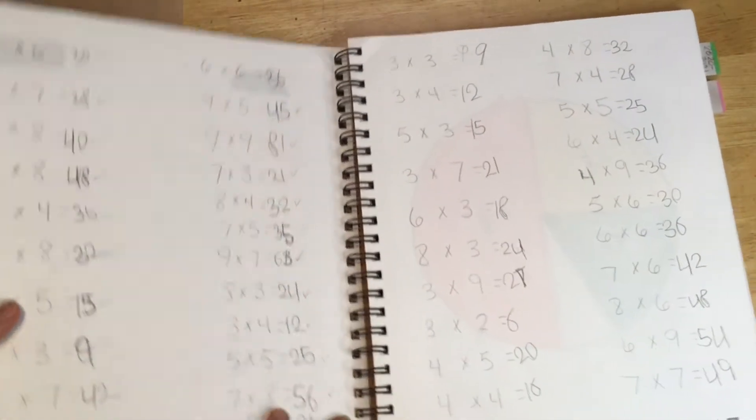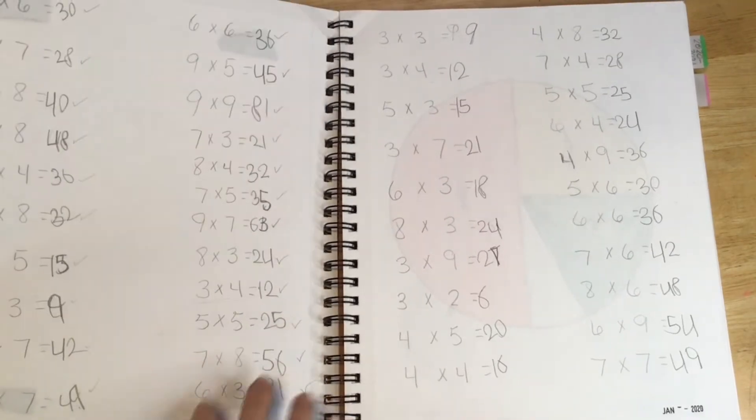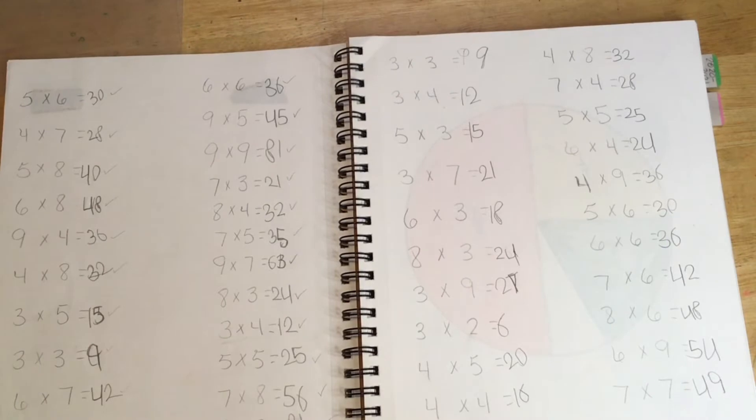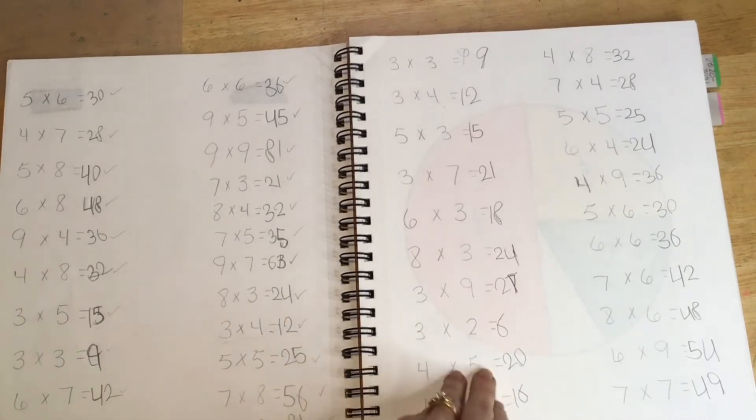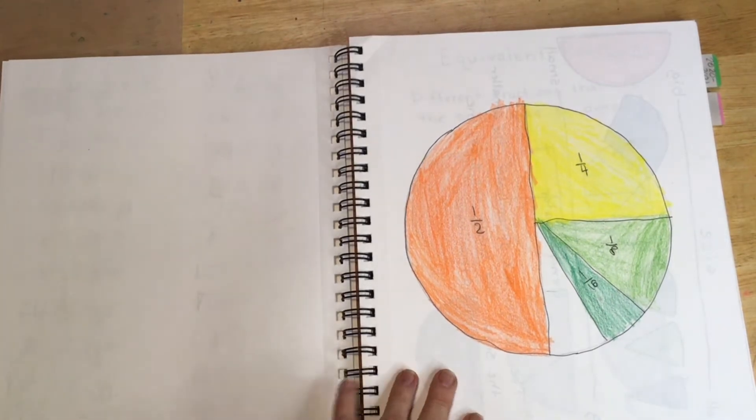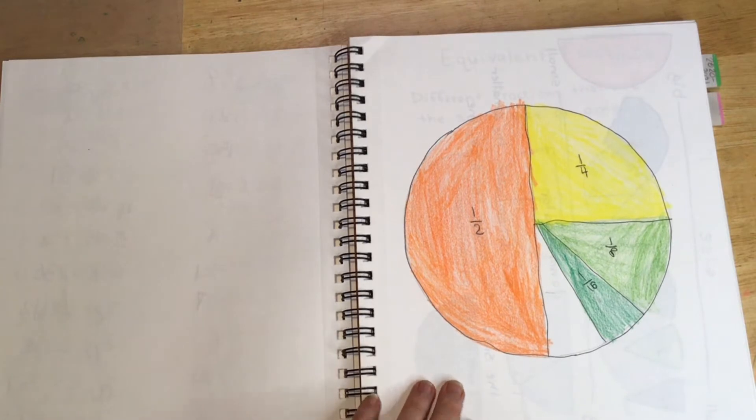And just so you know, we really do do some worksheets too. I try to limit the amount of worksheets, but I think some level of repetition in some way and mastery is important. So we do do some of that. This was her fraction main lesson book, and I had her put a lot of details into this because I knew we would need to come back to it for review.